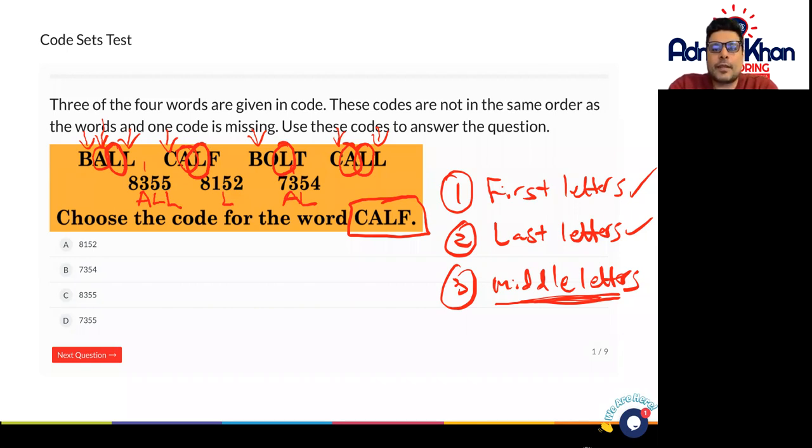Let's have a look. So can we make this word here 8355? What do you think that will be? That could be either ball or it could be call. So we'll come back to the first number. Let's have a look at 7354. Can we make a word here with 7354? Can we make a word?